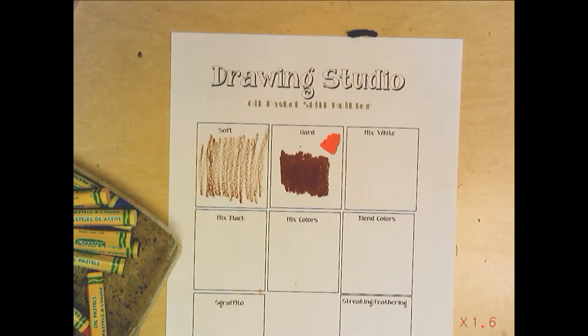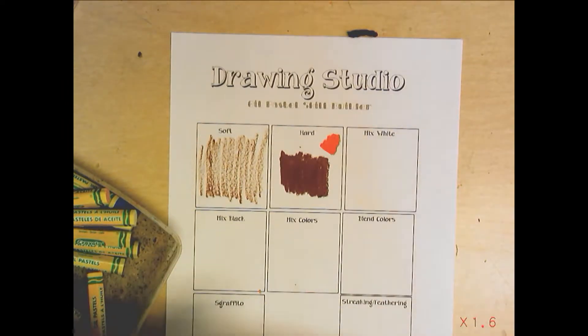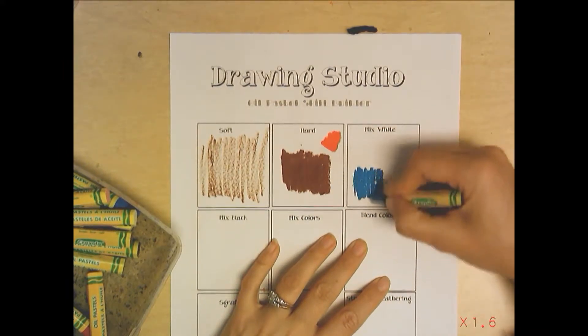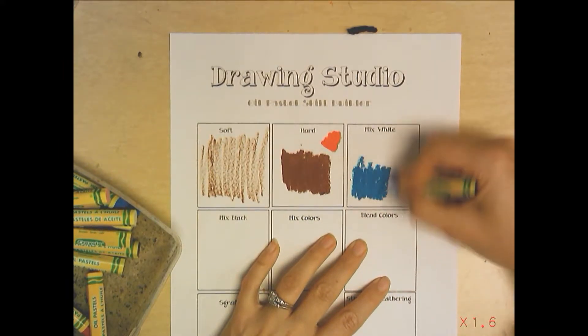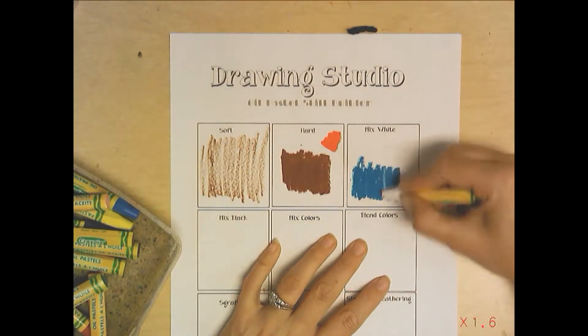Next we're going to do mix with white. Pick a color and just kind of color in a little bit and press hard. Then take white and go on top of that color. I'm just going to do half of it white so you can see the difference.